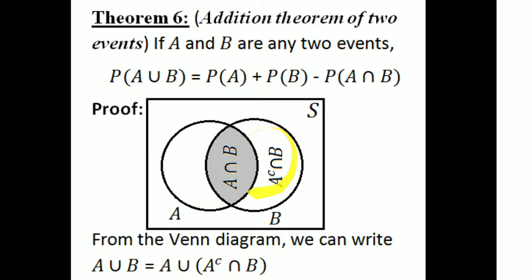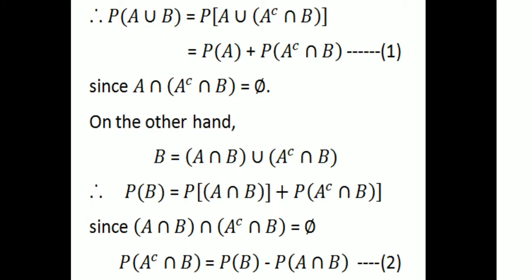From the Venn diagram, we can write A union B. So A union B equals A union A complement intersection B. Therefore A union B equals A union B, and we can ask the question: since A and A complement intersection B are disjoint events.